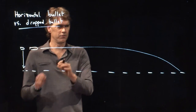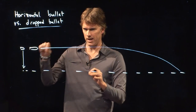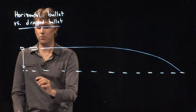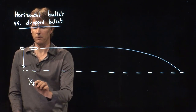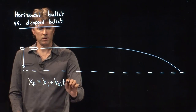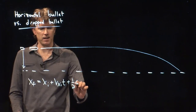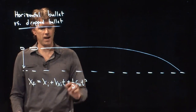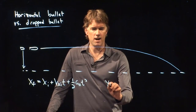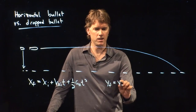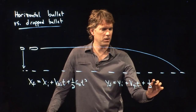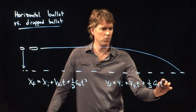These are both projectiles, right? As soon as they leave the gun or my hand, they are both projectiles, and so they are governed by the projectile equations, which are the kinematic equations: x-final equals x-initial plus vxi times t, plus one-half ax t squared. And y-final equals y-initial plus vy-initial times t, plus one-half a-sub-y t squared.